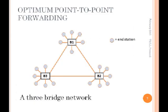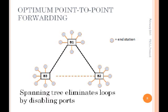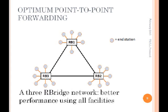Optimum point-to-point forwarding is pretty simple. Here's a little triangle of three bridges. If you run Spanning Tree, it turns off a port and makes it into a tree — as a result, frames between B2 and B3 have to go an extra hop. But if you use R-Bridges, you get optimal point-to-point forwarding and can use all of your facilities, getting higher aggregate bandwidth.